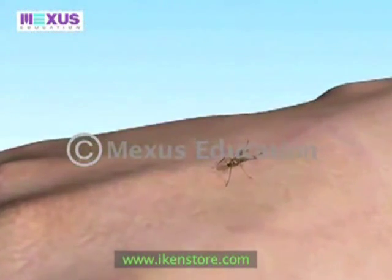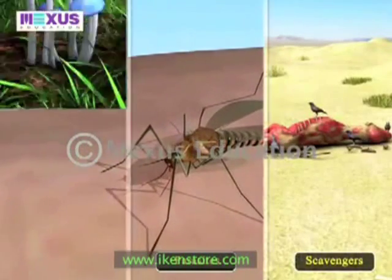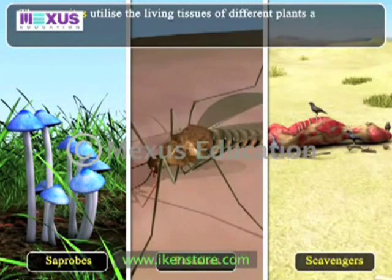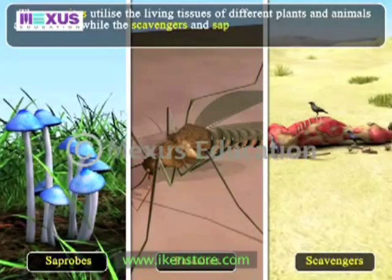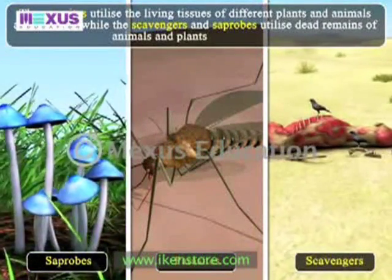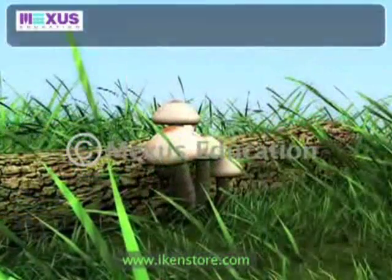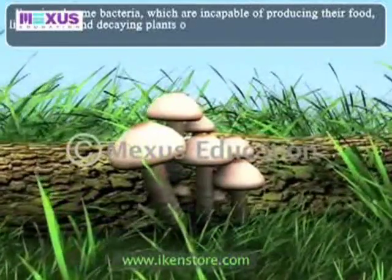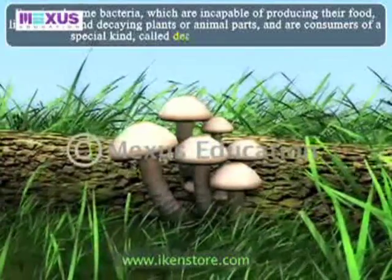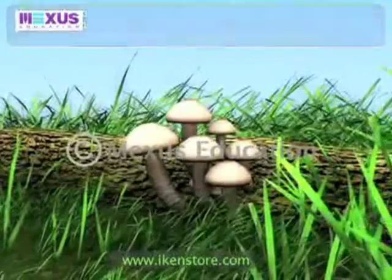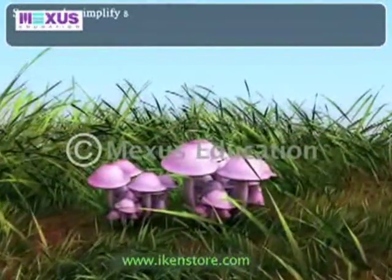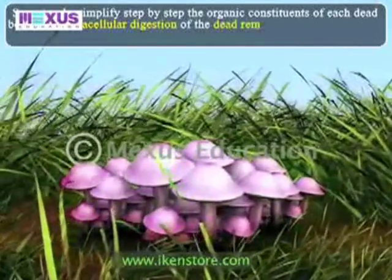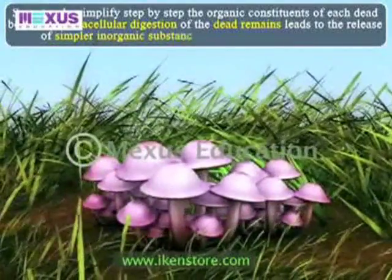Besides different categories of consumers, the parasites, scavengers and sapropes are also included among consumers. Parasites utilize the living tissues of different plants and animals as their food, while scavengers and sapropes utilize dead remains of animals and plants. Fungi and some bacteria, incapable of producing their own food, live on dead and decaying plants or animal parts and are consumers of a special kind called decomposers or saprotrophs. Saprotrophs simplify step by step the organic constituents of each dead body; extracellular digestion of dead remains leads to the release of simpler inorganic substances used as food.